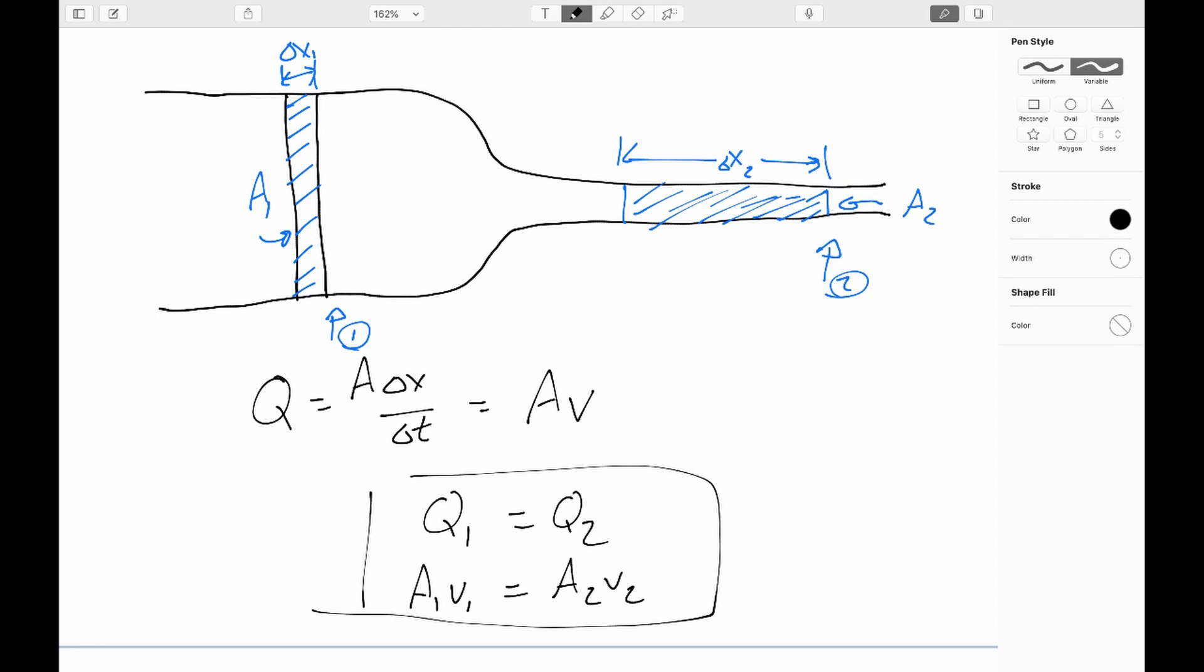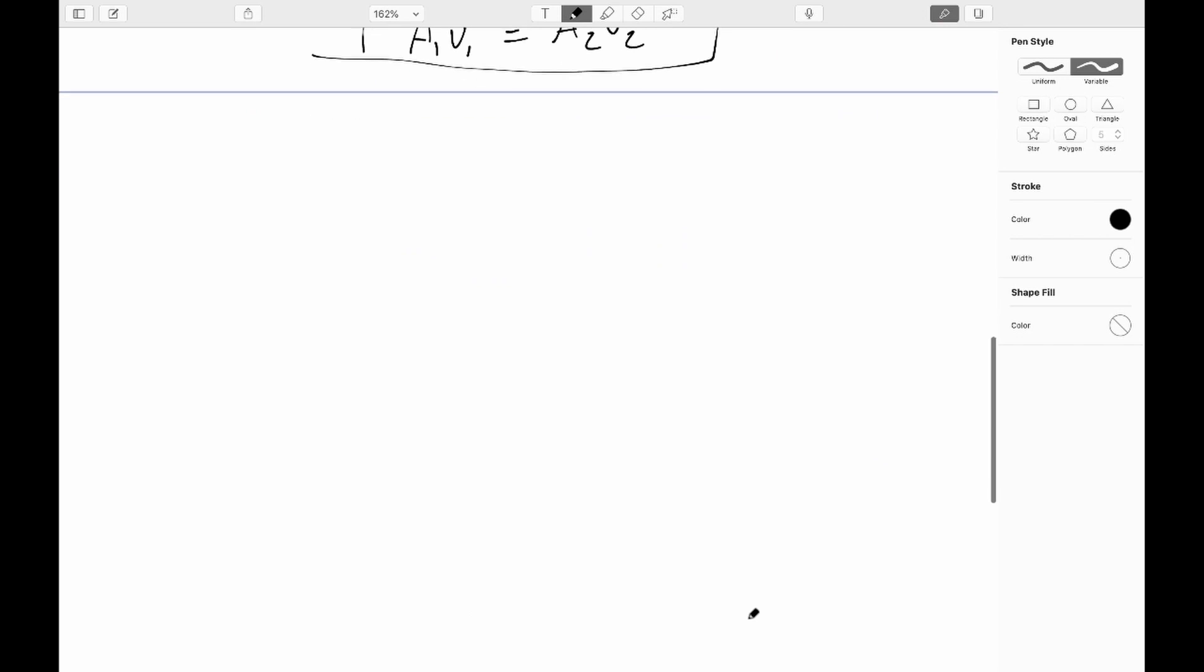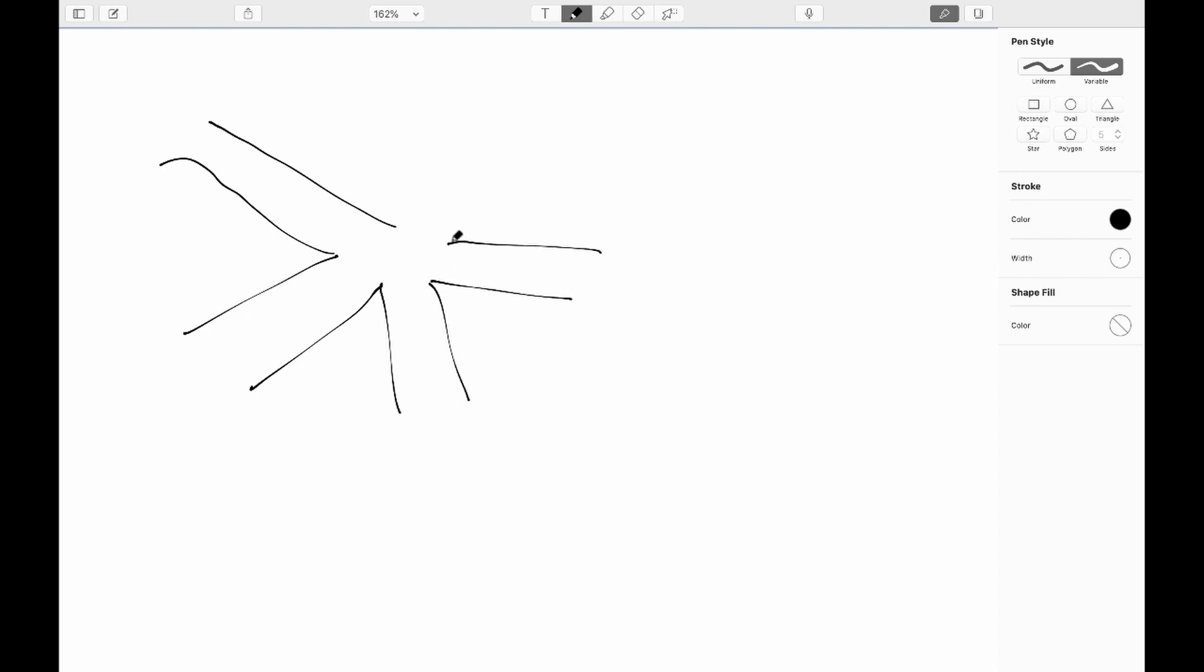Now, here when we make the constriction smaller, the speed of the fluid has to go up. Now there is another concern, and that is what if there's more than one branch? So if there's more than one branch, let's say we got a whole bunch of pipes all coming together into some kind of crazy junction here.